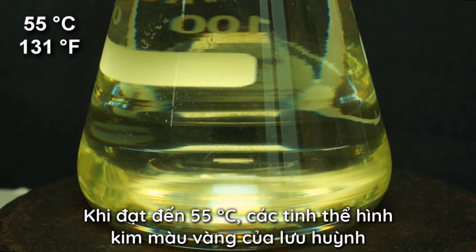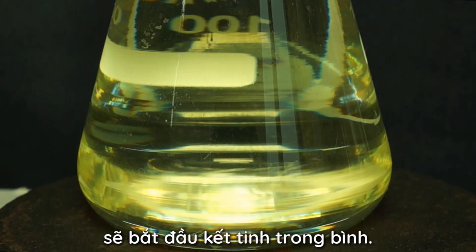Upon reaching 55 degrees Celsius, yellow needle crystals of sulfur will begin to precipitate in the flask.